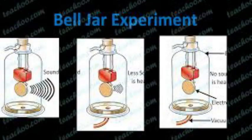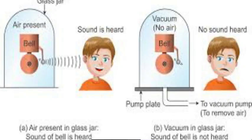As the air comes out of the jar, you will stop hearing the sound. When the air was there, you were clearly hearing the ringing of the electric bell. But slowly, as we remove the air, the sound reduces. When you remove all the air from the glass jar, you cannot hear the sound at all. The condition inside is now vacuum, so sound cannot travel through vacuum and hence you cannot hear it.